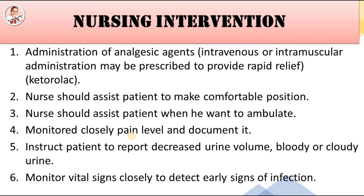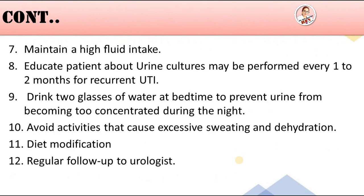Documentation karna bohot important hota hai. Intake output chart maintain karna zaroori hota hai. Check kiya jata hai urine ko: urine volume kaisa hai, urine mein blood to nahi aa raha, cloudy urine to nahi aa raha, koi albumen ya kuch aisa to nahi aa raha, color kaisa hai — yeh saari cheezein observe karni hoti hain. Vital signs most important hoti hain — closely monitor kiye jaate hain: patient hypertensive ho sakta hai, fever bhi ho sakta hai agar infection hai. High fluid intake maintain karna hai. Urine culture may be performed every one to two months for recurrent UTI.